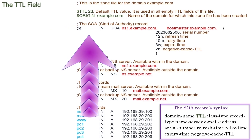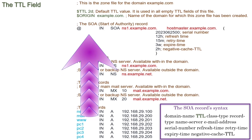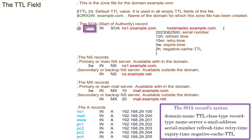This field defines the time for which other name servers or resolver systems can cache this record. If we leave this field empty, DNS uses the default value defined in the time-to-live directive.